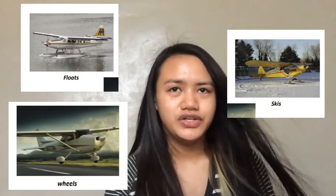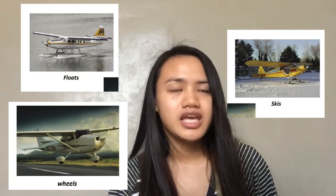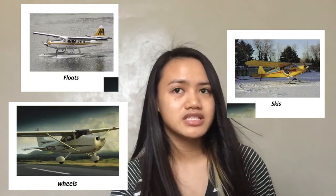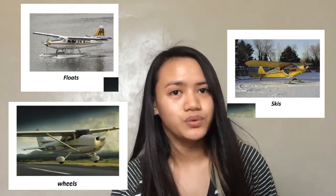The fourth component is the landing gear. It is the principal support of the airplane when parked, taxiing, taking off, or landing. The most common type of landing gear consists of wheels, but airplanes can also be equipped with floats for water operations or skis for landing on snow. The landing gear consists of three wheels: two main wheels and a third wheel positioned either at the front or rear of the plane. Airplanes with conventional landing gear are sometimes referred to as tail wheel airplanes, while airplanes with tricycle gear are sometimes referred to as nose wheel airplanes.